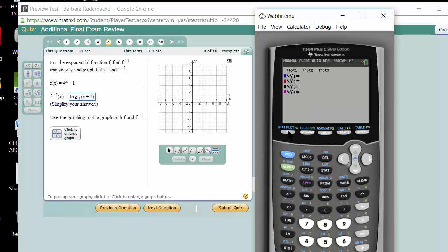Let's graph 4 to the x minus 1. 4, caret, x, right arrow key, minus 1. Graph. That's not the easy part. The part that gets easier is this. If I do second graph, I'll actually get some easy to graph points. Look at this.